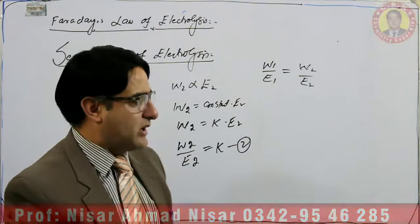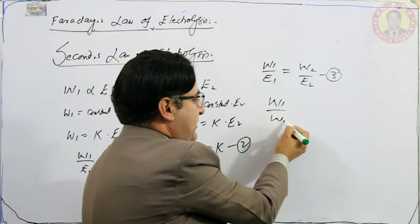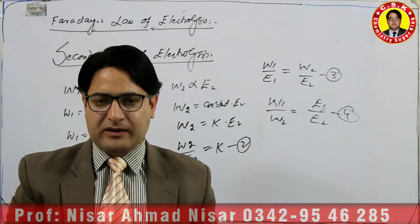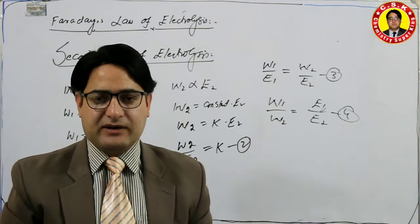Rearranging gives Equation 4: w1/w2 = e1/e2. That is another mathematical form of Faraday's Second Law of Electrolysis.